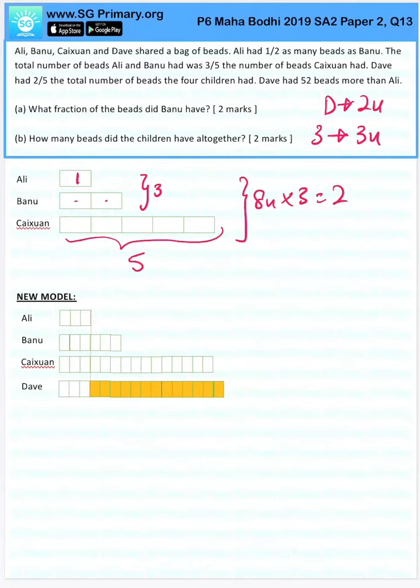So eight times three is 24. Because times eight, he also times eight. So Dave equals 16 units. And because we times three as a whole, everything times three. So Ali becomes three units, Banu becomes six units. We know Dave is 16 units and Caixian is 15 units.